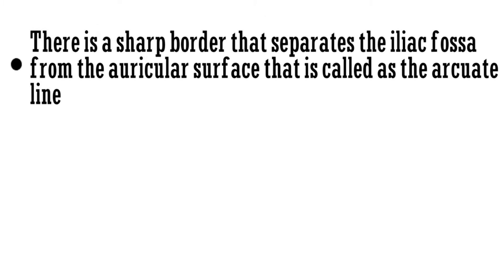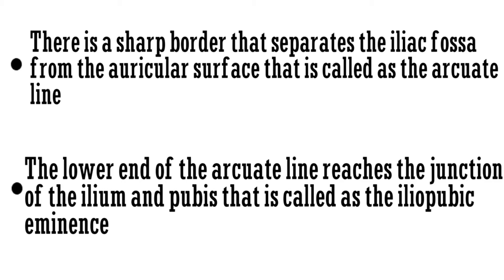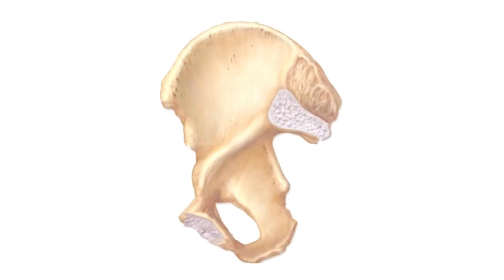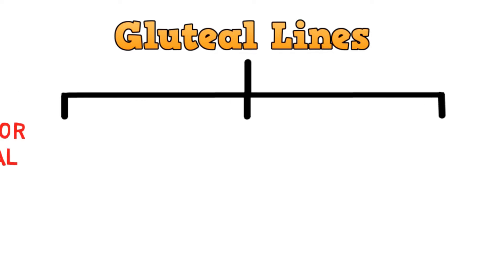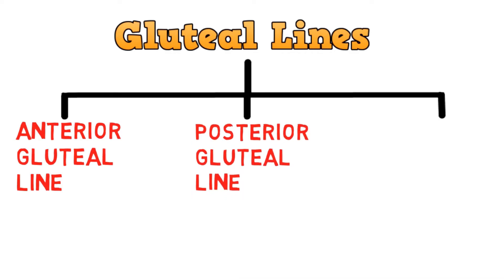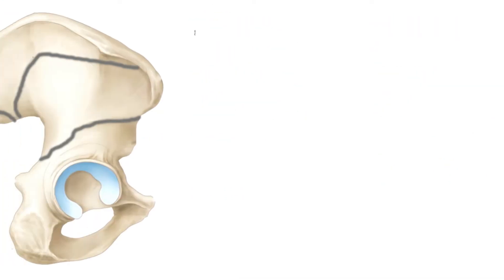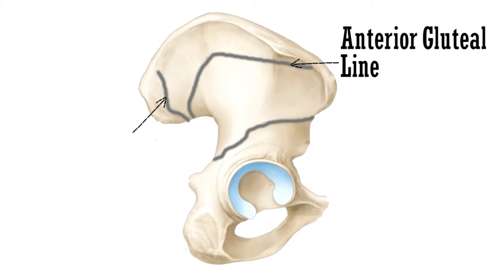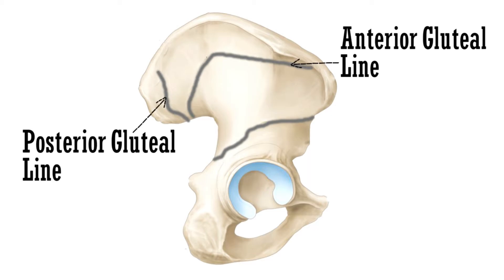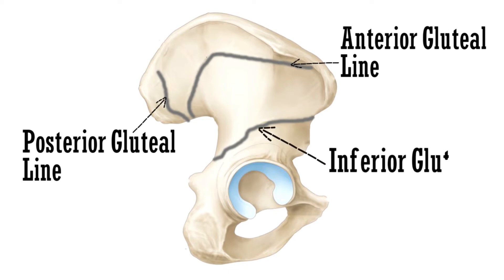There is a sharp border that separates the iliac fossa from the auricular surface, called the arcuate line. The lower end of the arcuate line reaches the junction of the ilium and pubis, called the iliopubic eminence. Lastly, there are three gluteal lines present on the ilium: the anterior gluteal line, posterior gluteal line, and inferior gluteal line. These lines are present on the outer surface of the ilium.